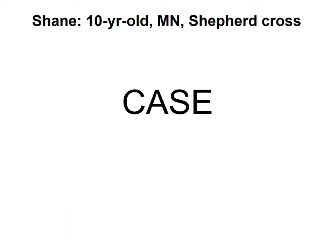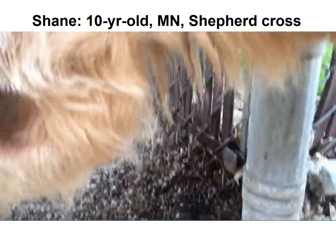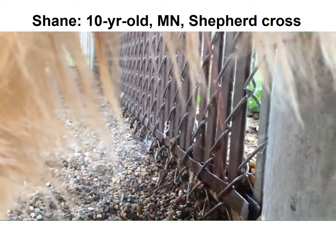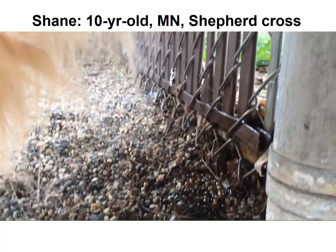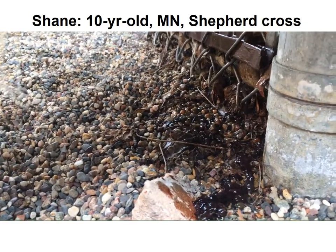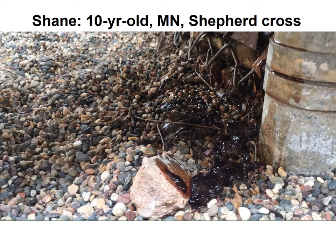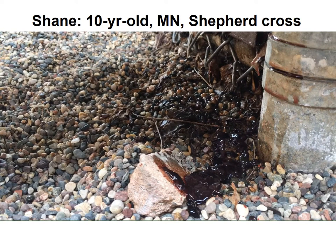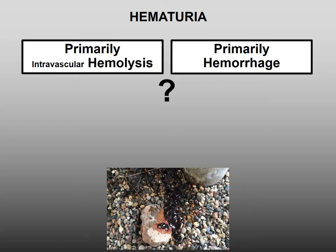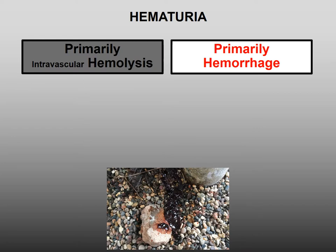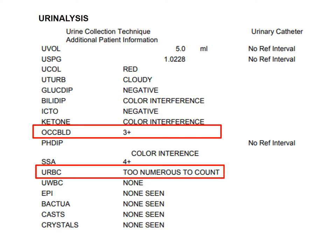With this information, let's look at a case. Shane is a 10-year-old male neutered shepherd cross. Having seen the video of his urination, let's ask a few questions. Hemolysis or hemorrhage? Only cells can cause a mounding up of blood — therefore, it's hemorrhage. Our urinalysis confirms it: there are too numerous to count red blood cells.